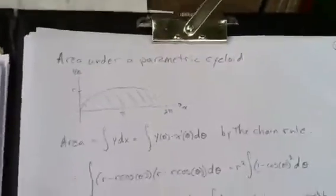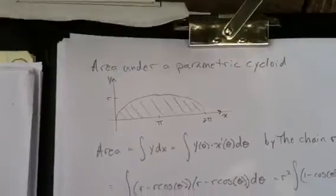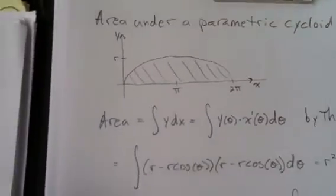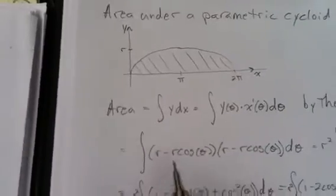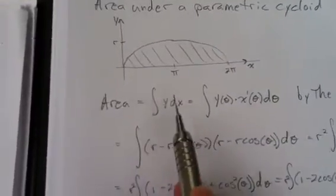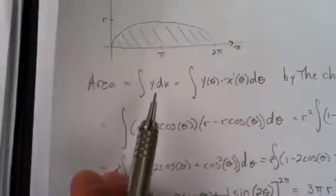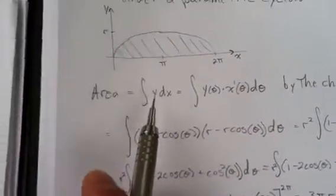Area under a parametric cycloid. Here is a rough sketch of my cycloid. And area is normally integral of y, the heights, with respect to x, right? That's a good idea for area. Base times height.